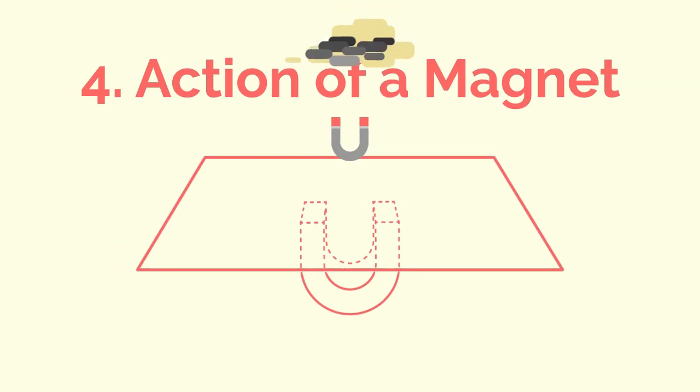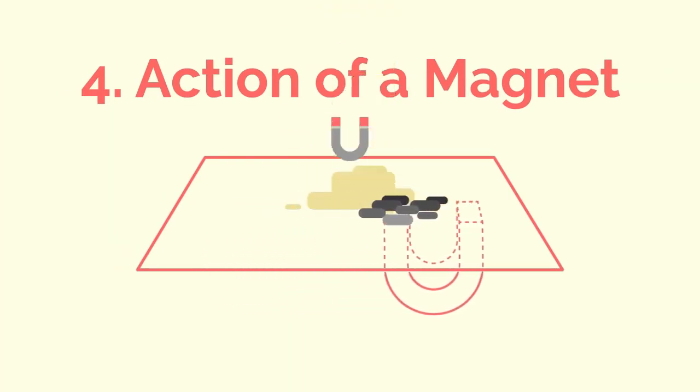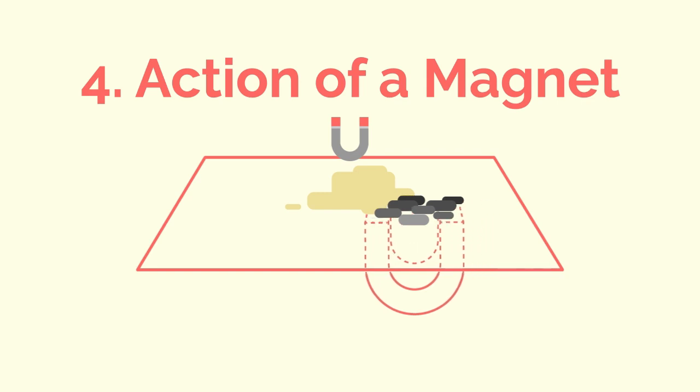As the magnet is moved underneath the paper, you will see that iron is attracted but the sulfur is not. Again, as in the test with water, the iron and sulfur can be separated, illustrating the fact that the components of the mixture can easily be separated by physical means.